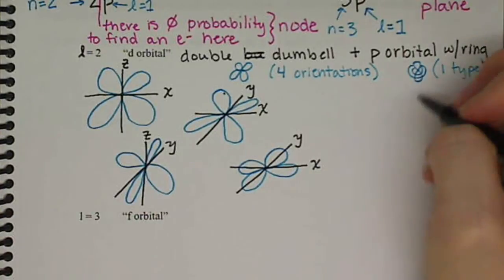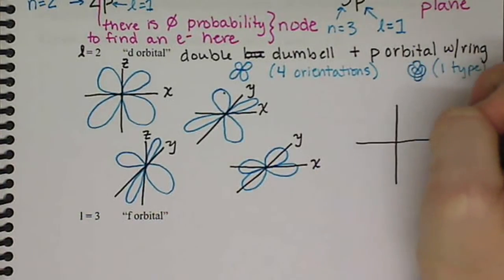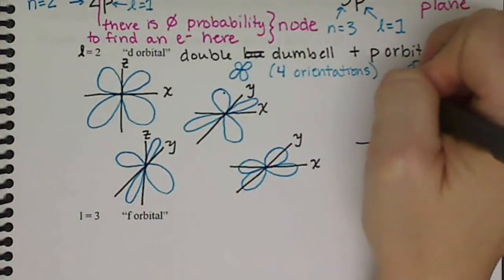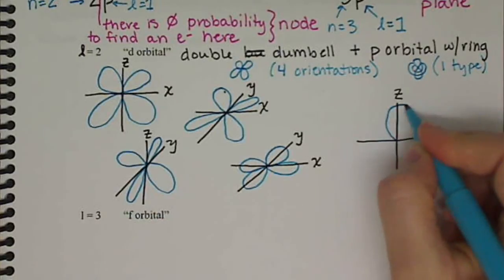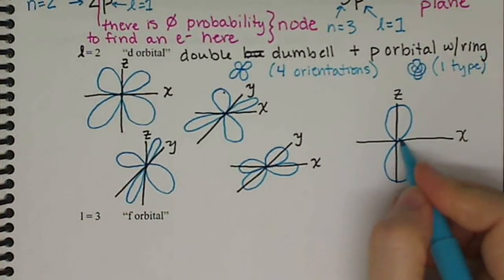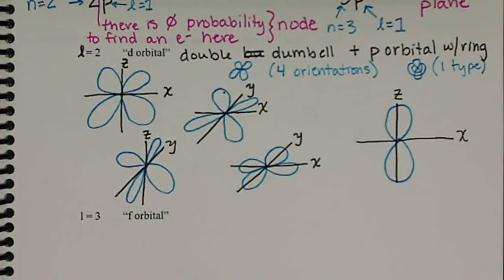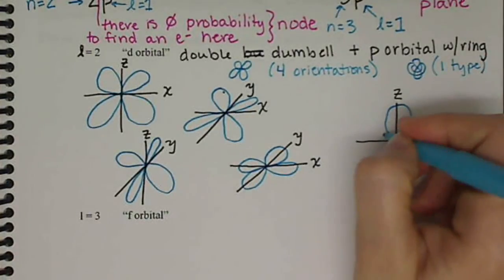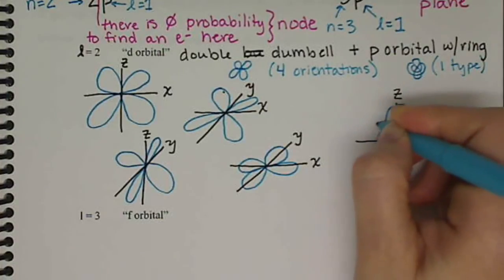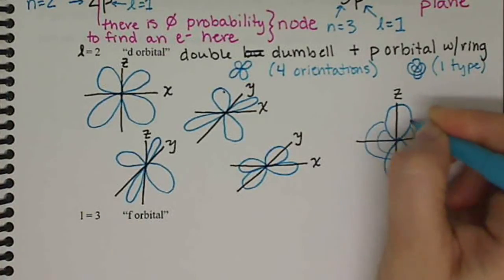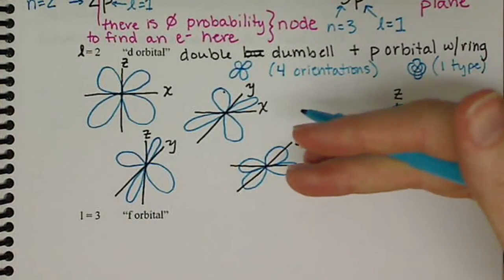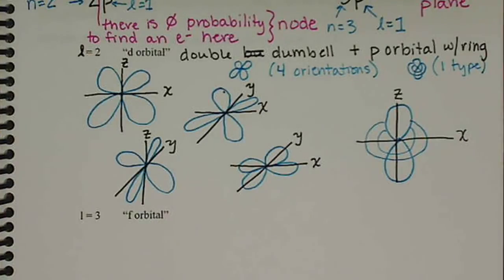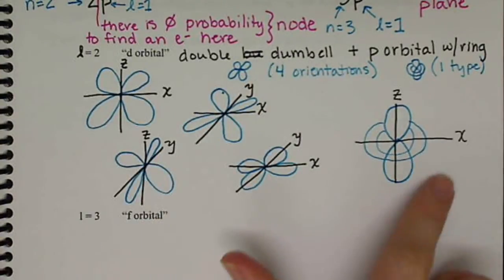And then our last one here, the p-orbital with the ring, that's going to be based on the x and the z axes. And our p-orbital portion of it, the single dumbbell, it's just like a p-orbital, it will be a little bit bigger. And then our ring goes around, and it's actually going to go around on the x-axis. So it's actually coming out at us, so it's kind of flipped over.